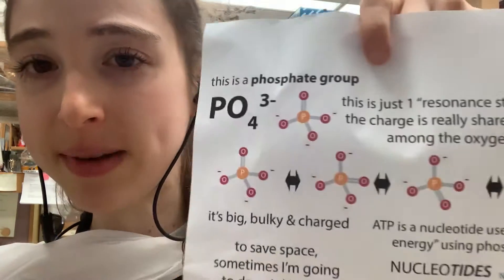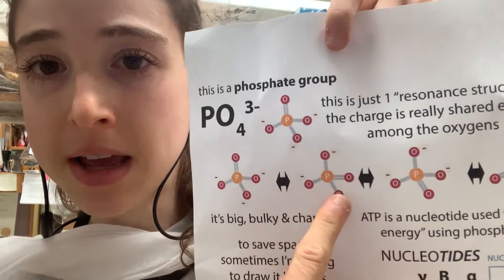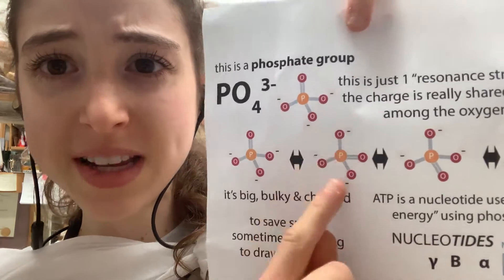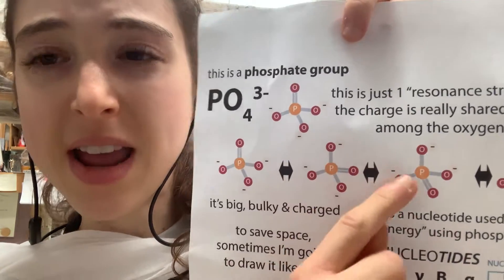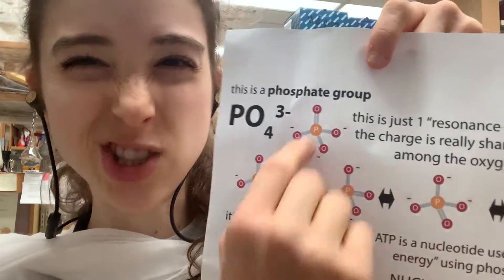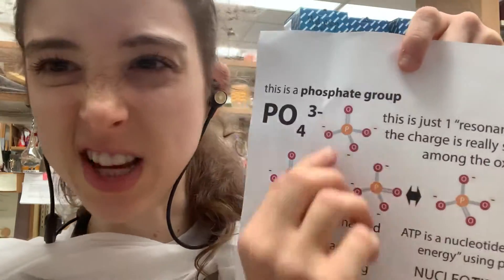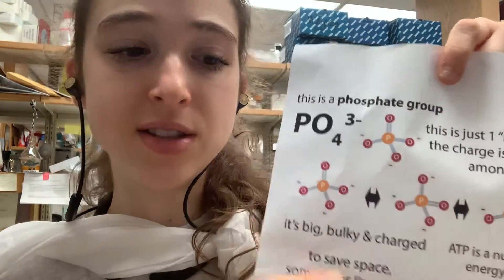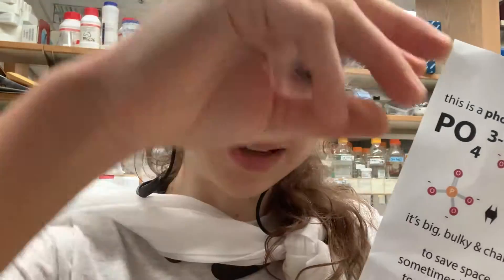You might see the double bond drawn in different ways — that's just because of resonance. Basically all those electrons are being shared around, so it doesn't matter which one you draw as the double bond and which as a single bond.